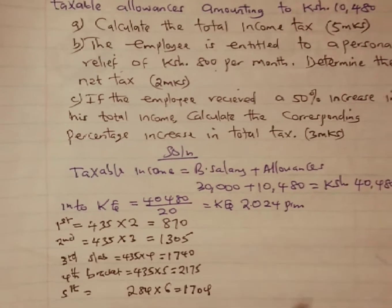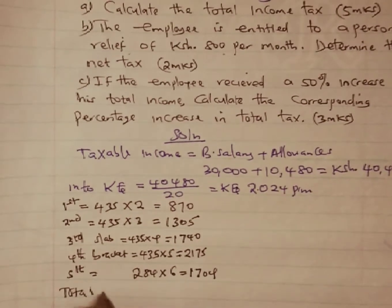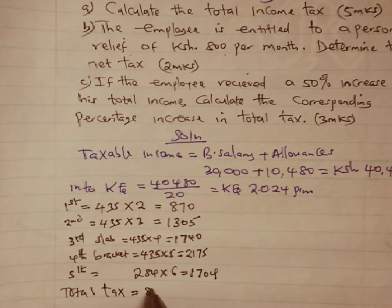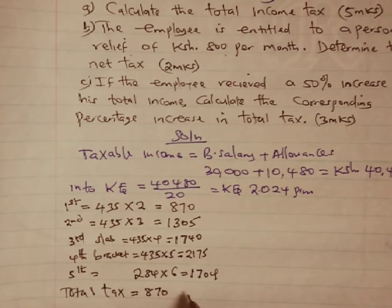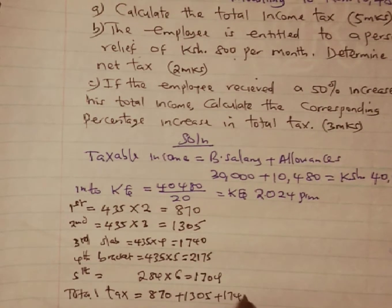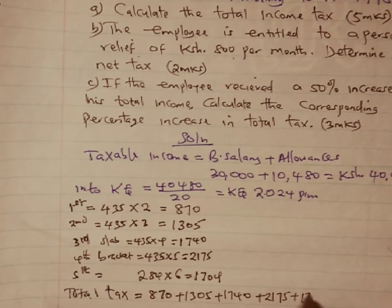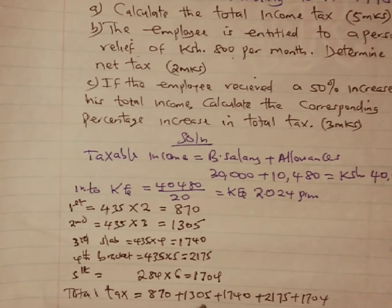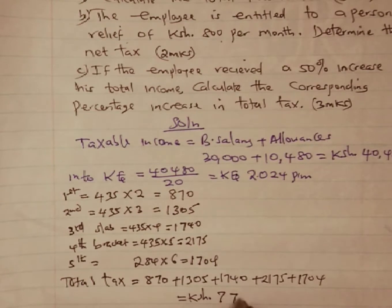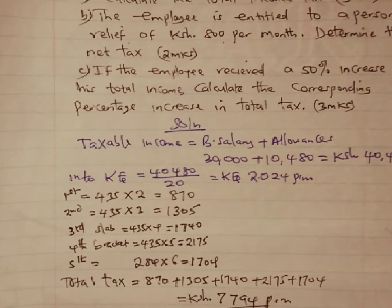Multiplying 284 by 6 gives us 1,704 Kenya shillings. To find the total gross tax, we add all bracket taxes: 870 plus 1,305 plus 1,740 plus 2,175 plus 1,704, giving us a total of 7,794 Kenya shillings per month as the gross tax.